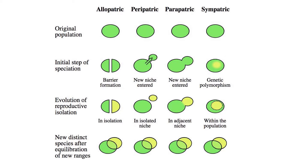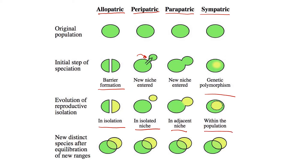To summarize: allopatric speciation occurs due to geographical isolation and both species evolve separately. Peripatric speciation is like allopatric speciation at a small level, where geographical barriers separate two species at the periphery. In parapatric speciation, ecological changes cause genetic differences leading to speciation in an adjacent niche. In sympatric speciation, ecological or random genetic differences take place in a small population which then evolves within the same niche as the parent population.